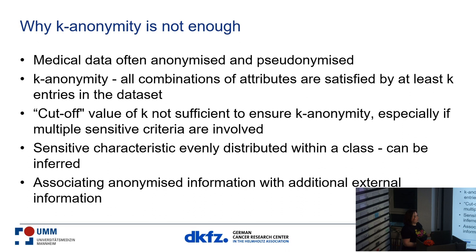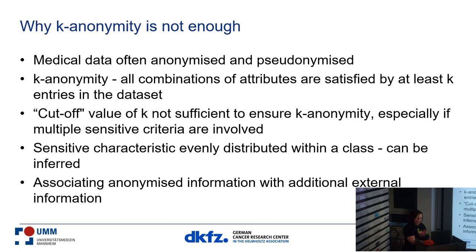K-anonymity would mean that for a certain criterion there are at least k patients for whom that criterion is true, so for whom the results are returned. But because such an attack is possible, we decided it's not enough and that the aggregated data also needs to be obfuscated. There are also other attacks — for example, where a sensitive characteristic can be inferred. If you know that your neighbour went to a COVID hospital, they probably had COVID at that time. Anonymized data can also be de-anonymized — there was a famous example where Netflix released ratings of their users and researchers managed to cross-reference it with IMDb data and de-anonymize it. So there's the need for obfuscation.